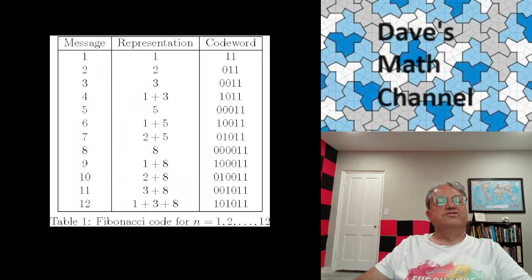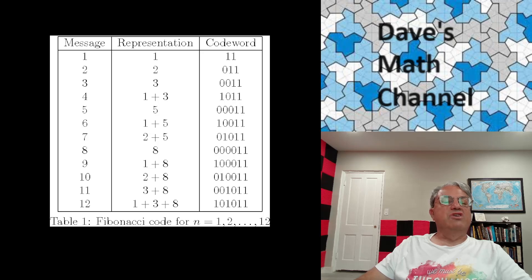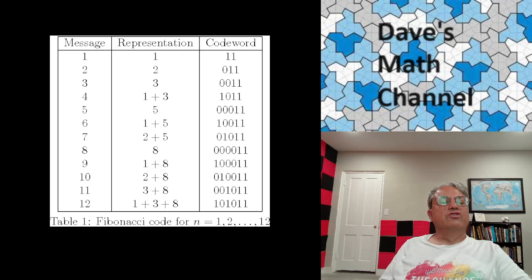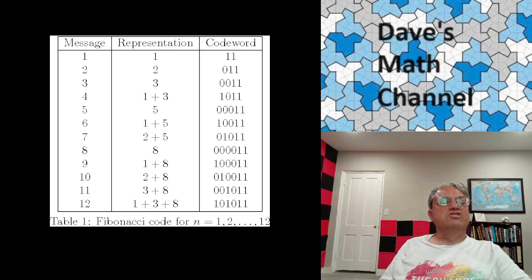It's useful to look at a table of the first few Zeckendorf representations — this shows all representations for positive integers up to 12. You might notice a pattern: notice what happens when you're one less than a Fibonacci number, like 4. Four is one less than five, and four equals 1 plus 3 — two non-consecutive Fibonacci numbers whose indices differ by two.